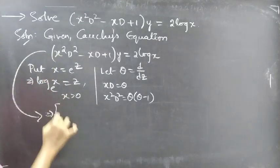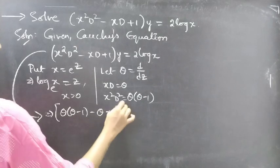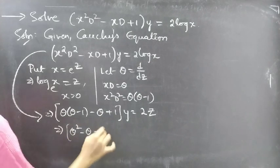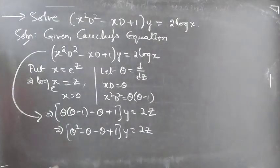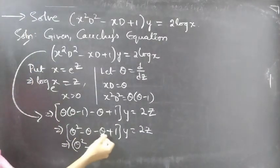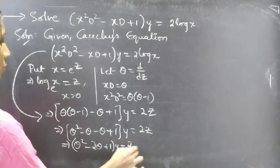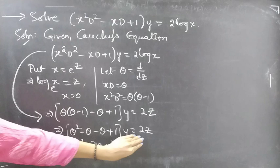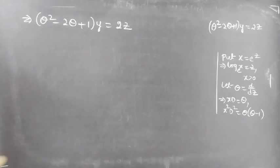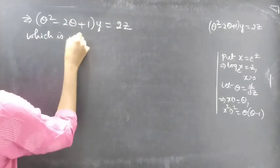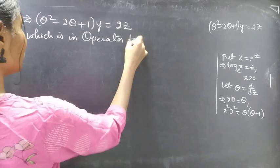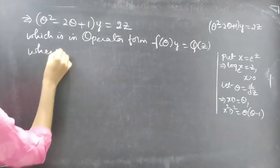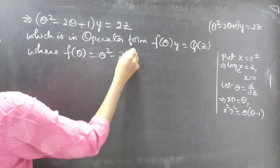Now the equation becomes: theta(theta minus 1) minus theta plus 1, all into y, equals 2 times z, replacing log x by z. Expanding: theta squared minus theta minus theta plus 1, which simplifies to theta squared minus 2 theta plus 1, into y equals 2z. This is a differential equation with constant coefficients in operator form: f(theta) times y equals a function of z, where f(theta) equals theta squared minus 2 theta plus 1.